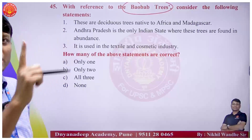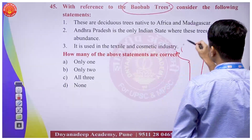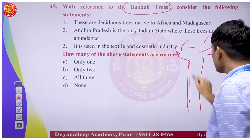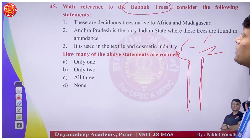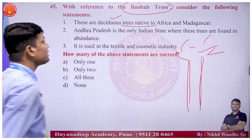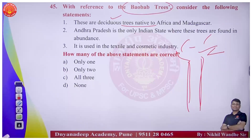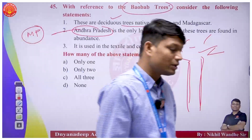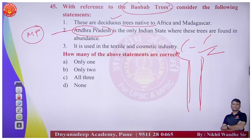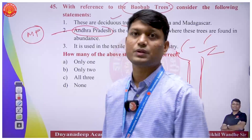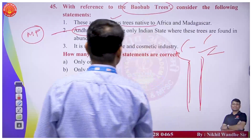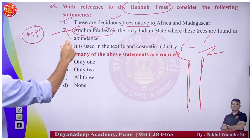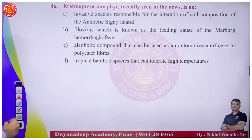Baobab trees: they have a very broad and long trunk with very sparse canopy. They are deciduous trees native to Africa and Madagascar - that is correct. The statement that Andhra Pradesh is the only state in India where these trees are found is incorrect - they are found in Madhya Pradesh. The tree is used in the textile and cosmetic industry - correct. Option B, only two statements, is the correct answer.